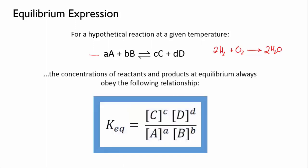So for our hypothetical reaction, when it comes to equilibrium, we can say that the concentrations of the reactants and products will always obey this relationship. When a chemical formula is put inside a square bracket, the square brackets mean the concentration of that chemical. So this is the expression.